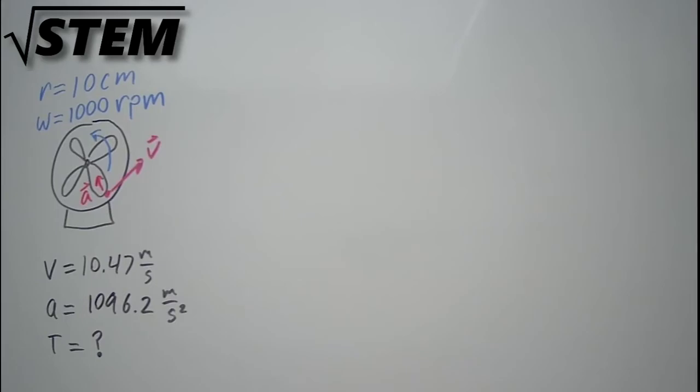Now to find the period, we'll start with the definition of velocity, where velocity equals the amount of distance that you travel over the amount of time it took. Since the period is the amount of time it takes to make one complete revolution around the circle, that means to find the period, the velocity will be equal to the circumference 2pi r over the period t.